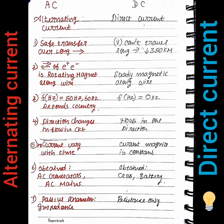DC current is limited to around 350 km. For long-distance transmission, DC has two times more resistance than AC.